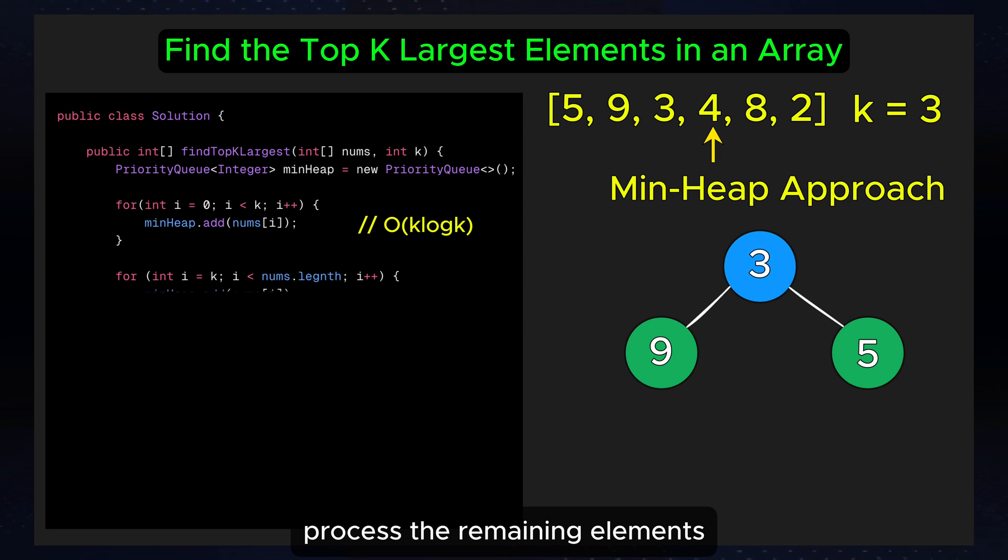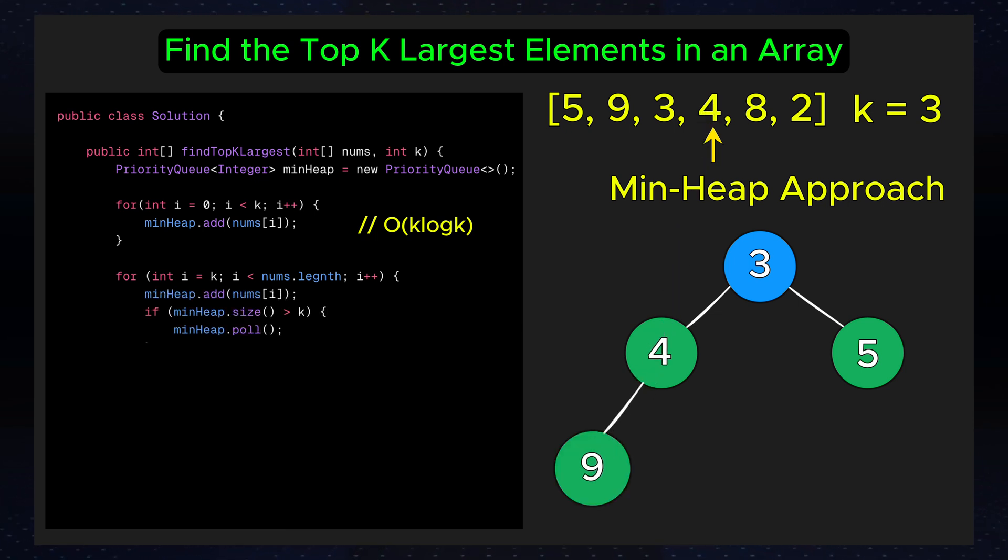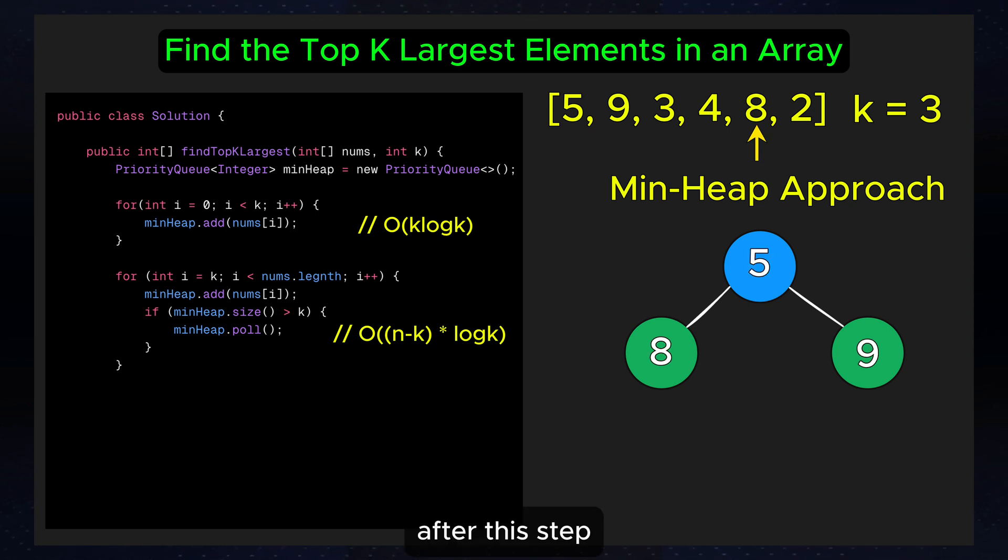Next, process the remaining elements. Add each element to the min heap. If the heap size exceeds k, remove the topmost element, which is the smallest one. This step takes O((n-k) log k) since adding and removing elements from the heap takes log k time, and we are doing it n-k times.